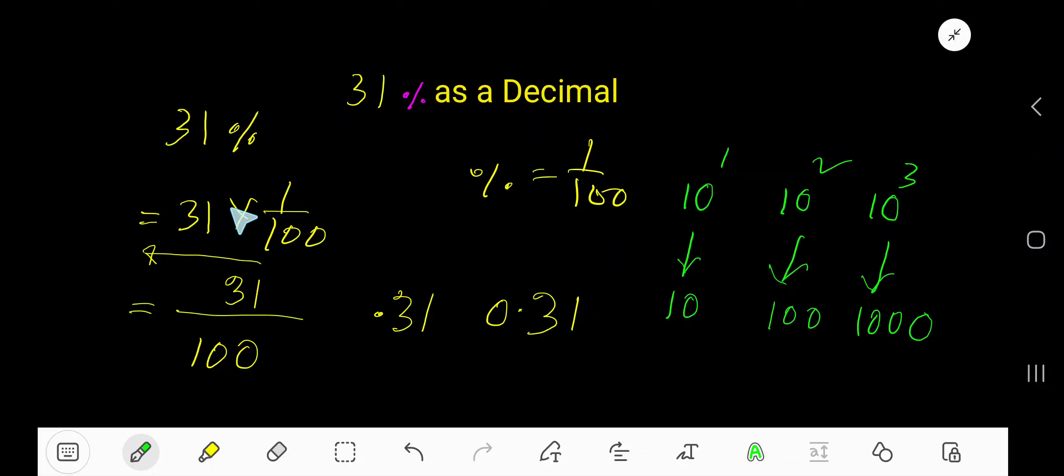31% as a decimal. Percent means 1 over 100. So rewrite 31% as 31 times 1 over 100.